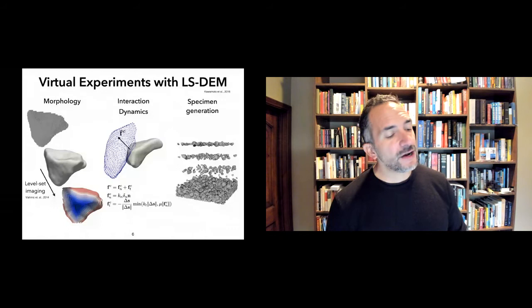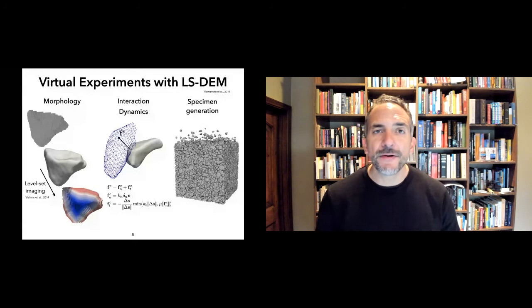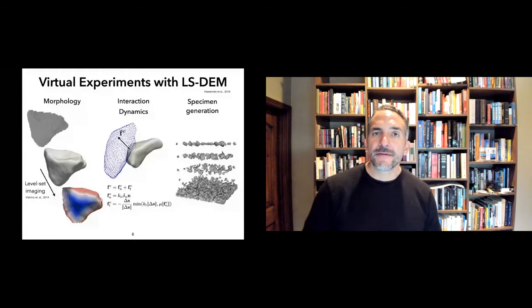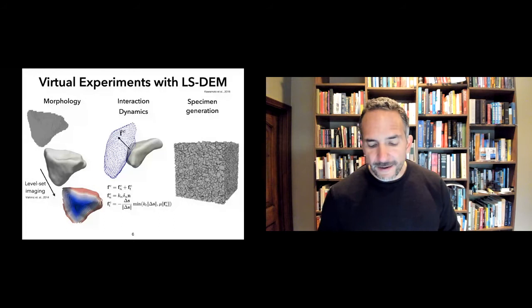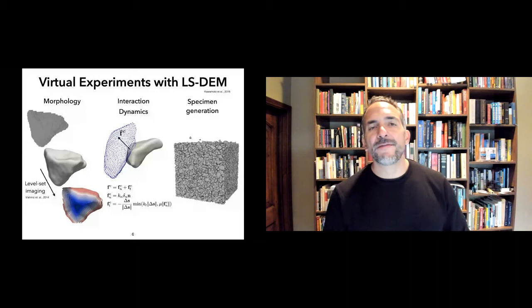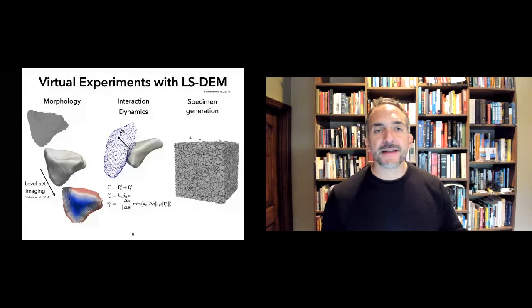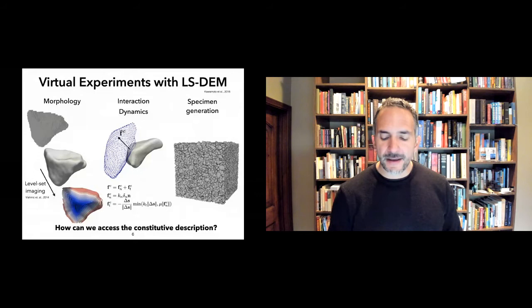We have shown that these virtual experiments can perfectly capture real physical experiments, and they have massive advantages over physical experiments. These virtual experiments are reproducible, controllable, and scalable. Real physical experiments cannot be perfectly reproducible because you can never make quite the same sample, whereas here you can always have an identical sample, perfectly control the boundary conditions, and scale up and down as needed to obtain the constitutive response.